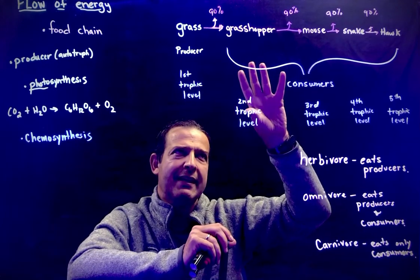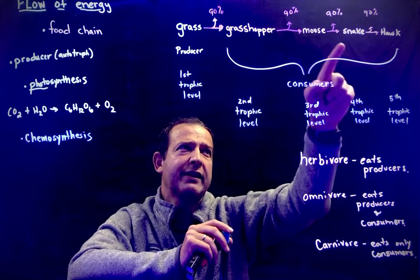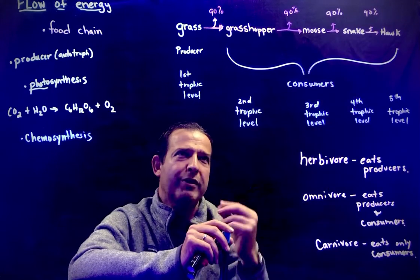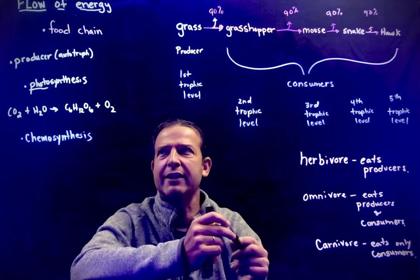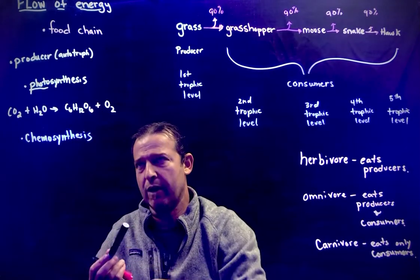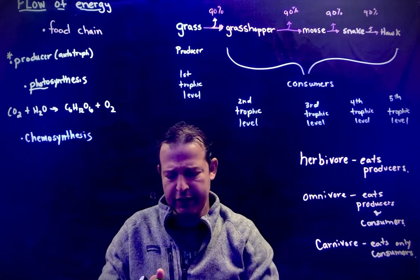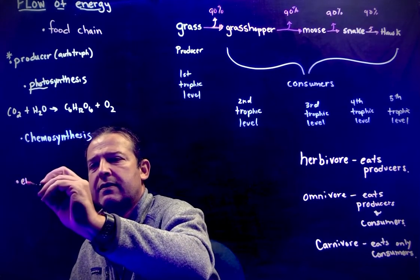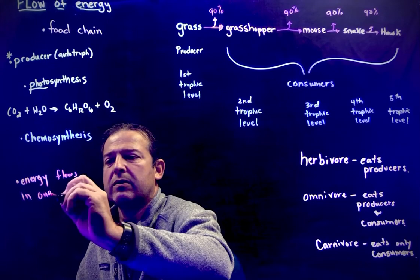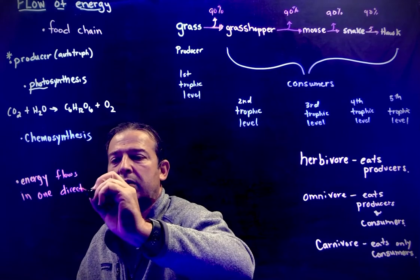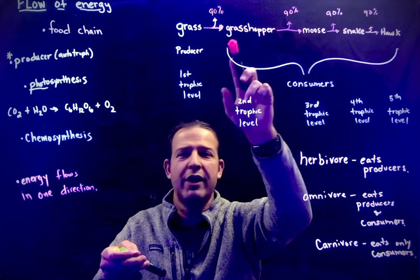Food webs are going to take many food chains and link them together. The mouse not only eats the grasshopper, it would also eat the grass. The hawk not only eats the snake, but it would also eat the mouse. So these things eat more than just what's depicted in this food chain. What the food chain is showing you is that energy is flowing, and it's only flowing in one direction. Food chains always start with a producer, and the energy in them only flows one direction.